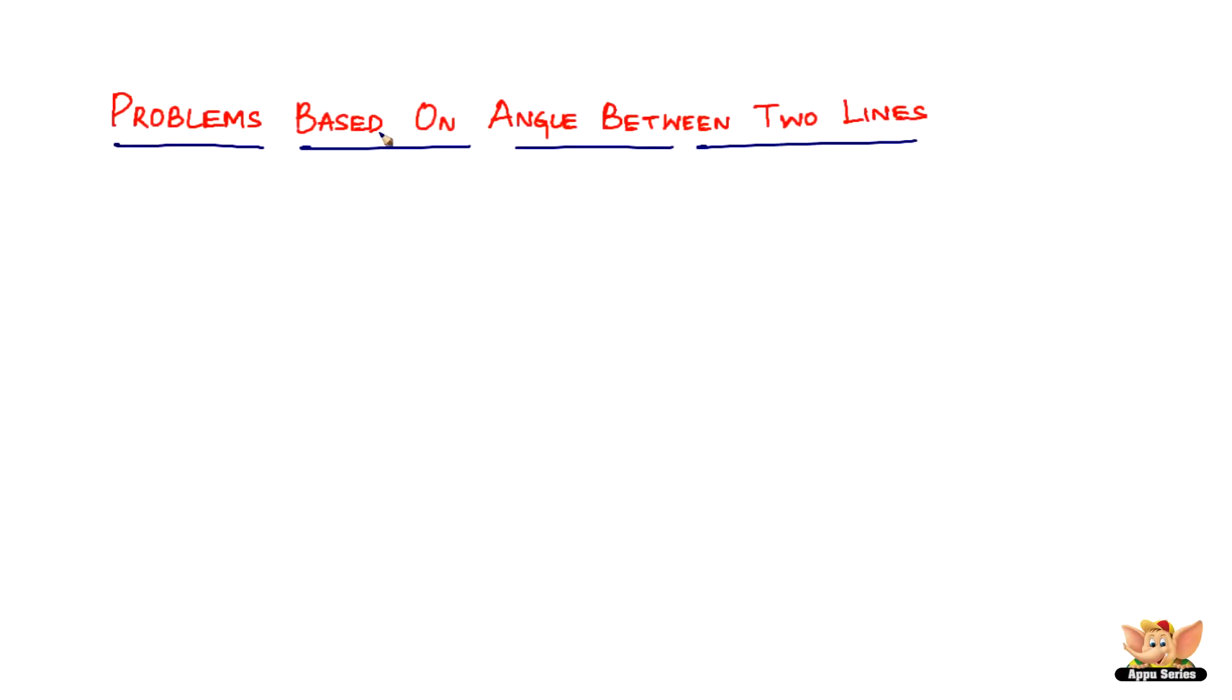In this video, let us solve problems based on angle between two lines. Here we've got the question which reads like this. It says, if A, B and C are three points, find the angle between BA and BC.